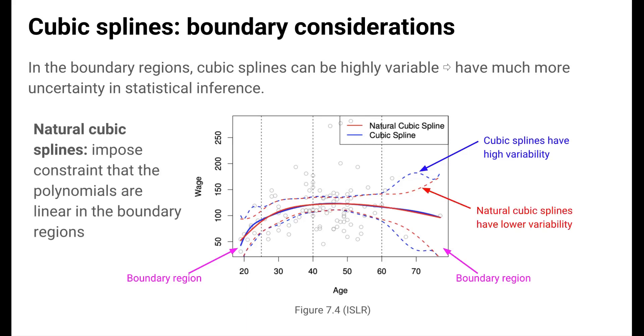A small modification of the cubic spline is called the natural cubic spline. Natural cubic splines impose the constraint that the polynomials are linear in the boundary regions. We see from the confidence interval bands that natural cubic splines have lower variability in the boundary regions. Natural cubic splines are a very popular tool for non-linear modeling, for their flexibility in handling many sorts of non-linearity.